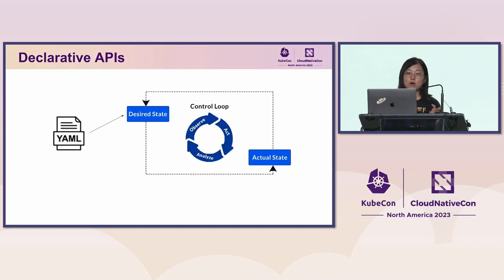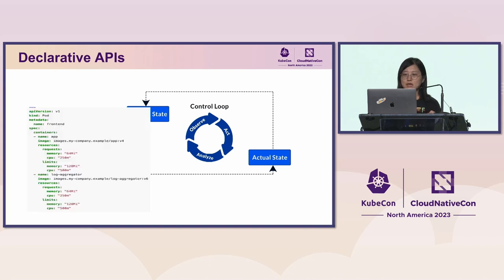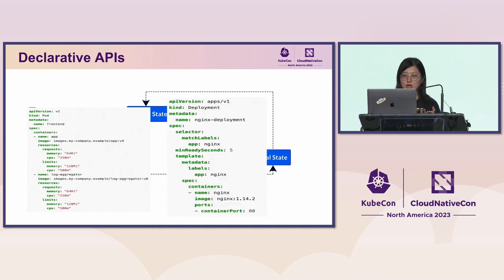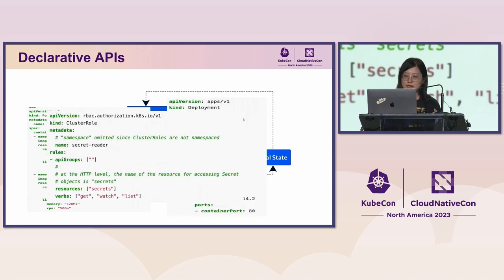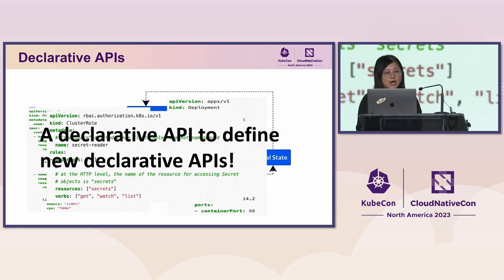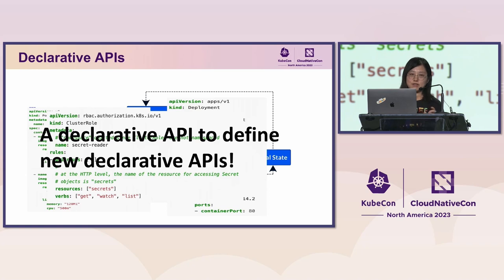As everyone knows, all the Kubernetes magic is done through declarative APIs — from things like resource allocation to basic stuff like resource object creation and authorization. We even have a declarative API to define new declarative APIs: the Custom Resource Definition.